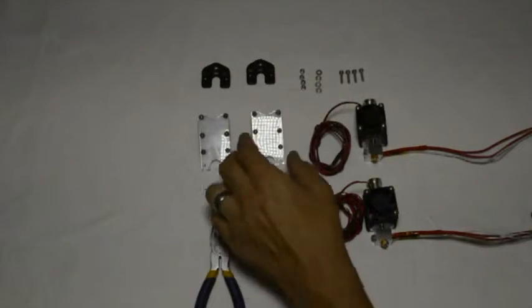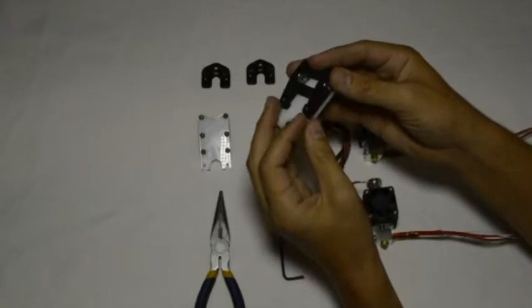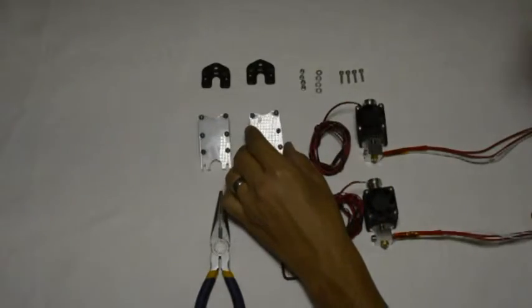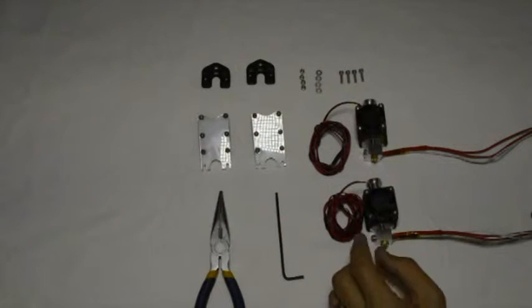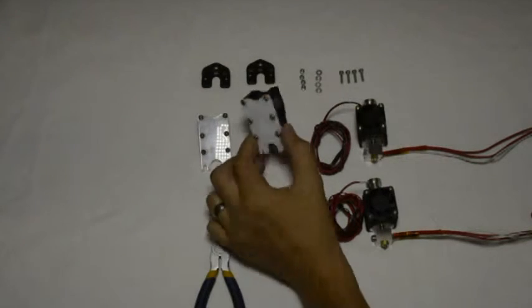When you are finished the assemblies will look like that. With the perspex part securely fastened to the black printed component. And now the next step will be to mount the hot ends to these two assemblies.